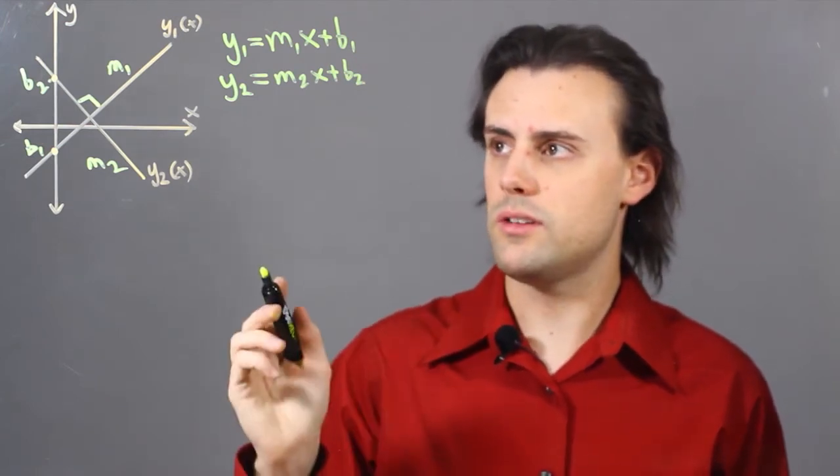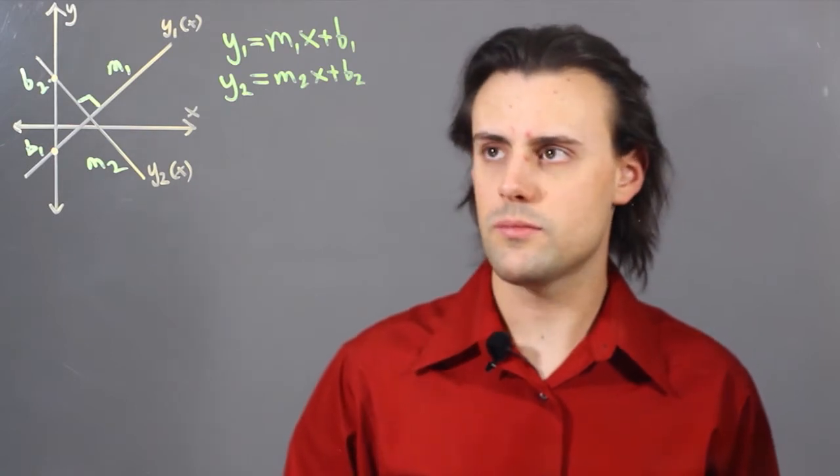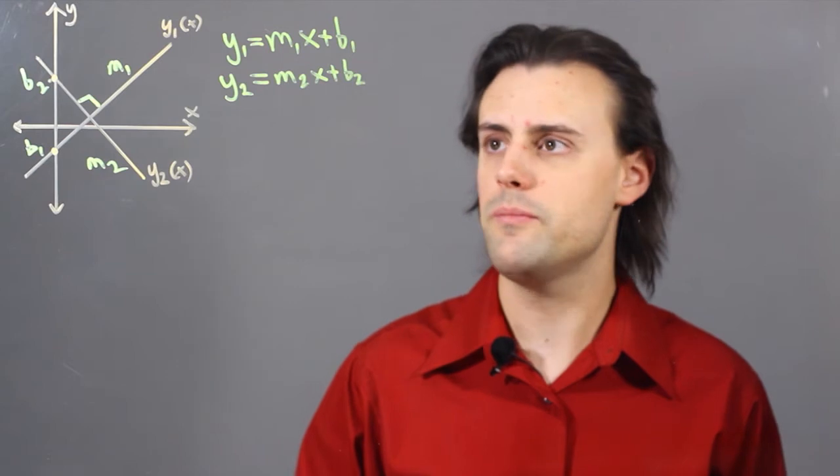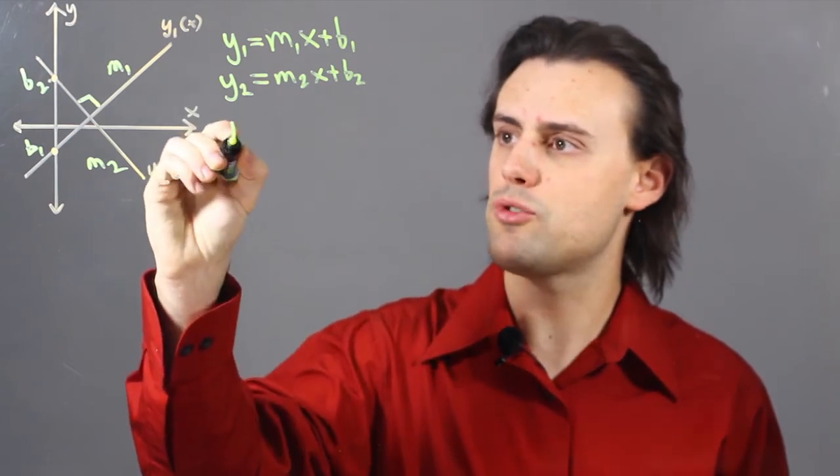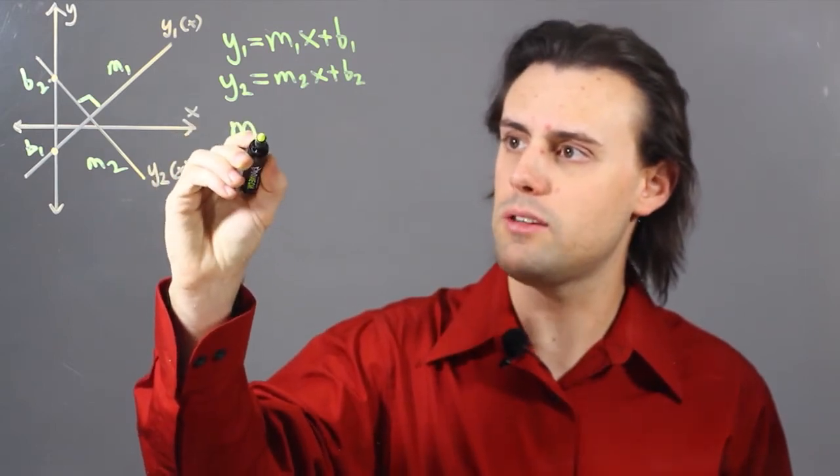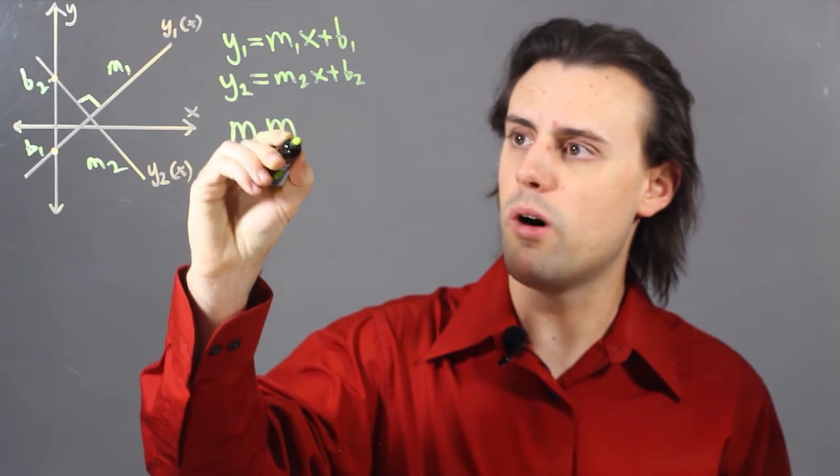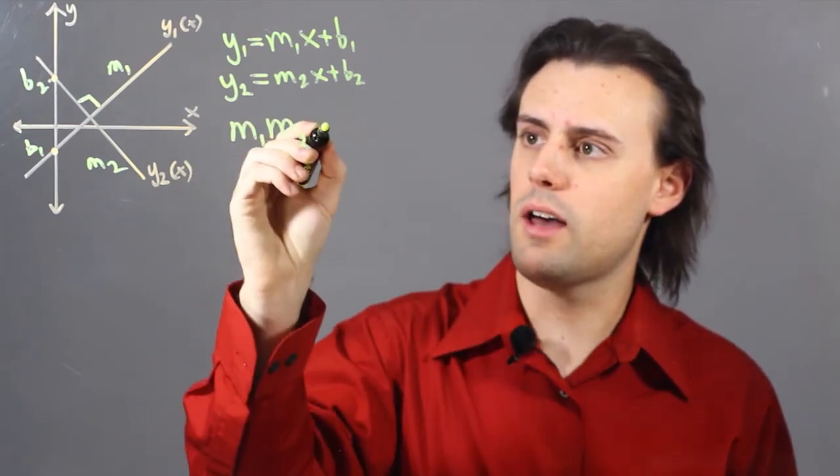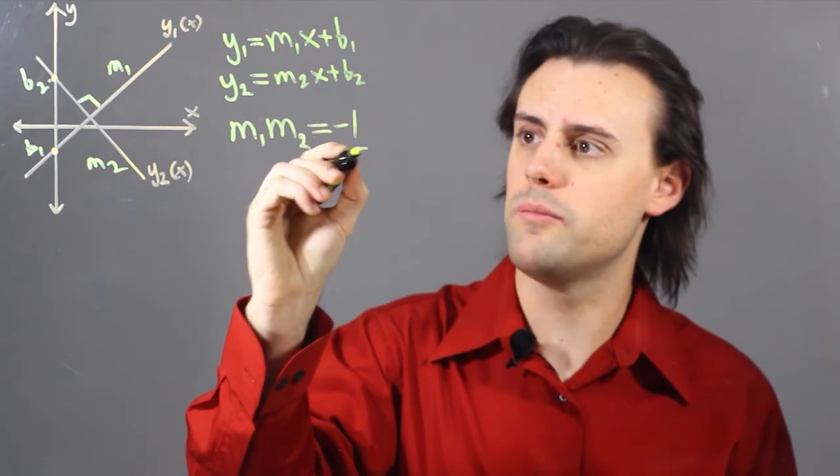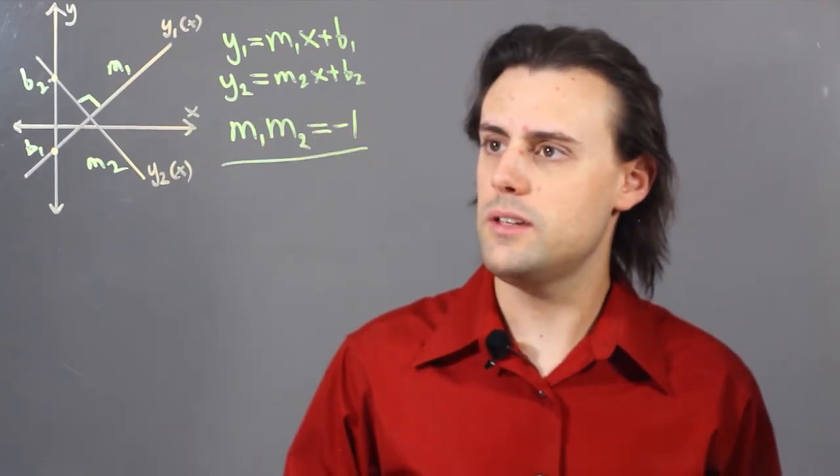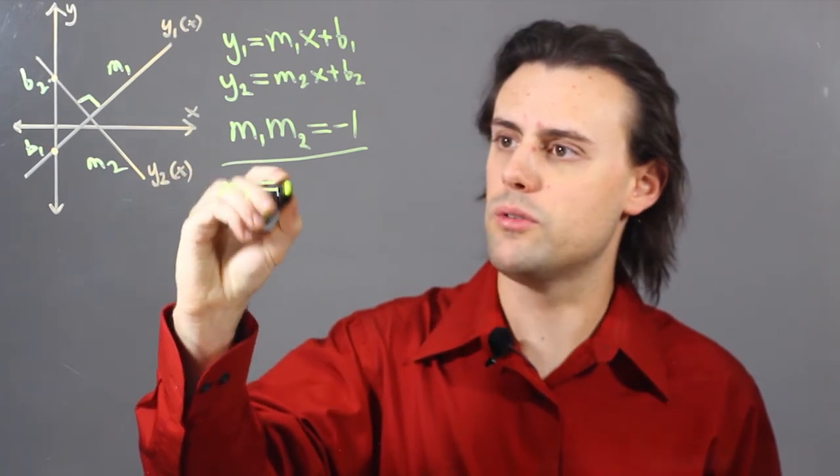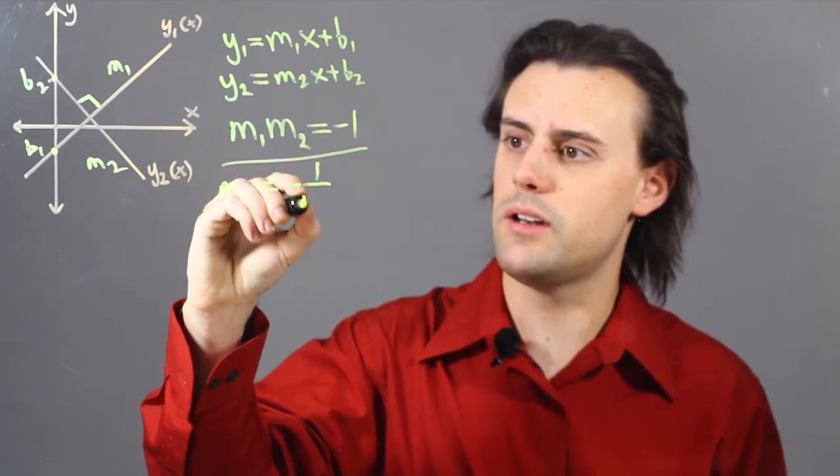However, since these lines are perpendicular, we can write the slopes in terms of just one slope, m, because we have the constraint that for perpendicular lines, the slope of one line times the slope of the second line has to be equal to negative 1. This means that m1 will be equal to negative 1 divided by m2.